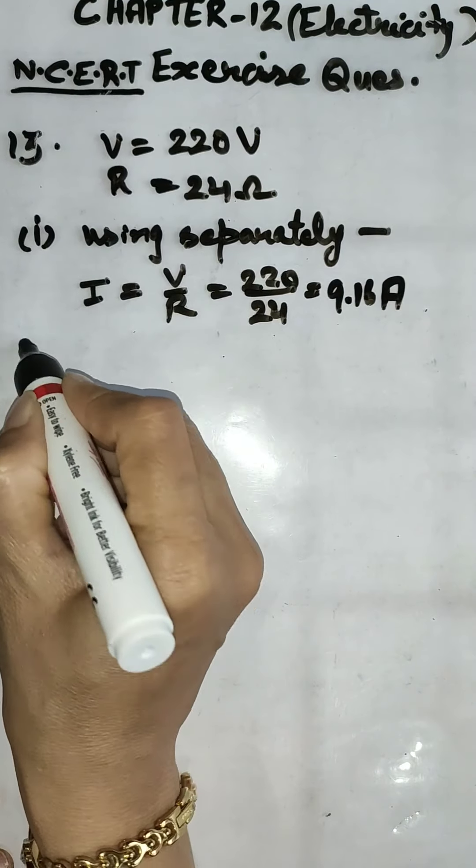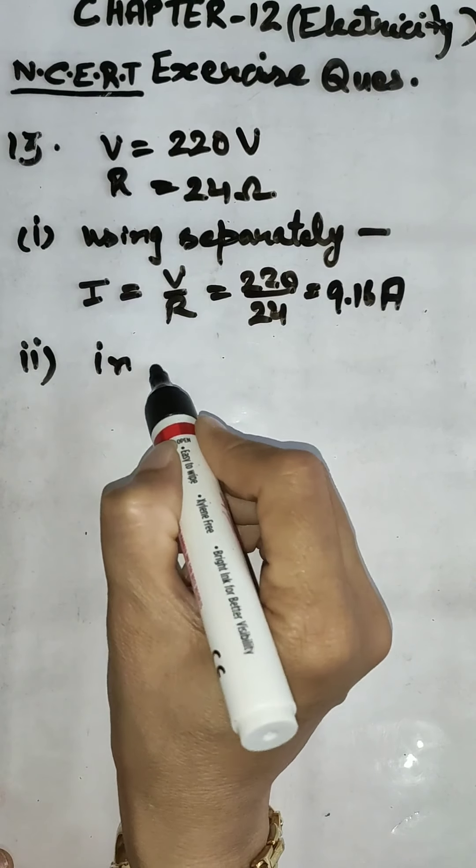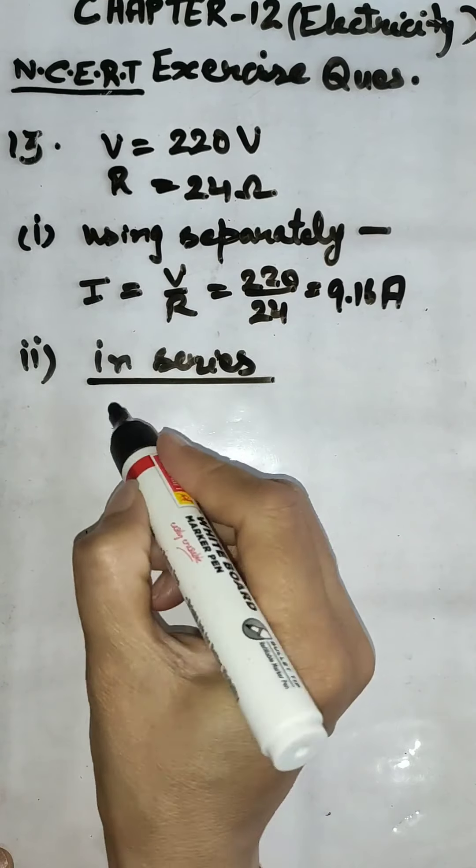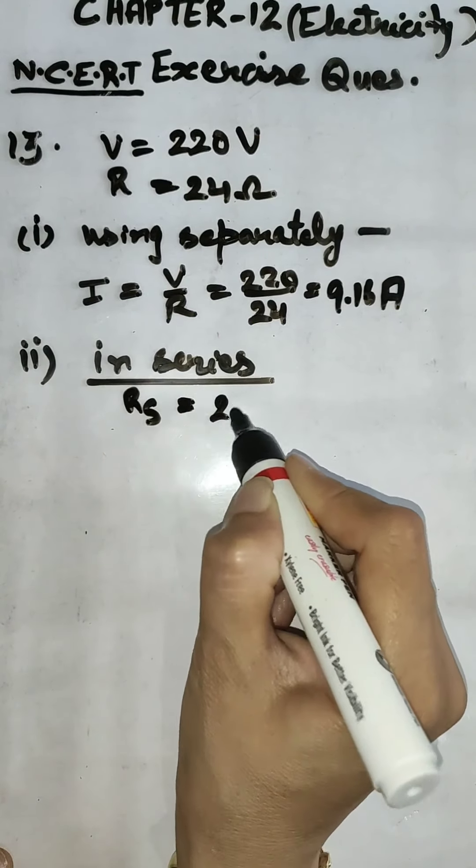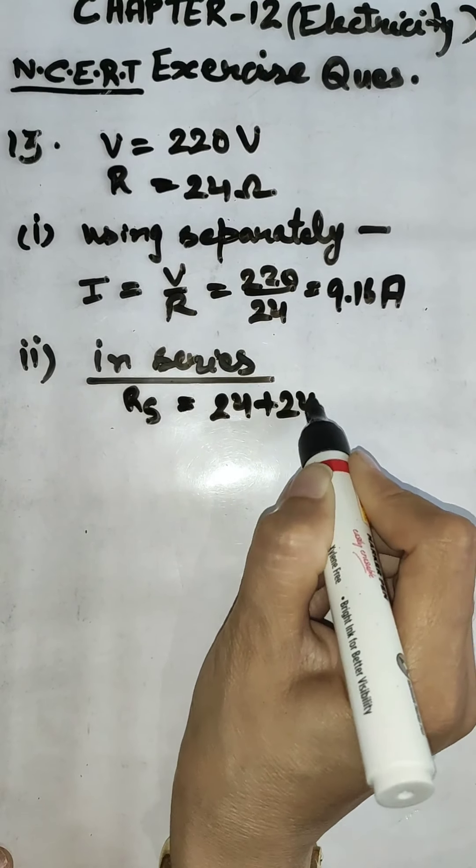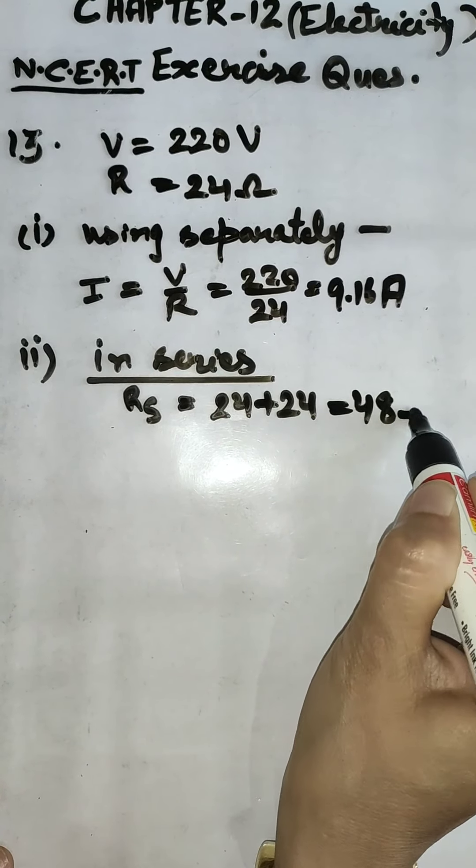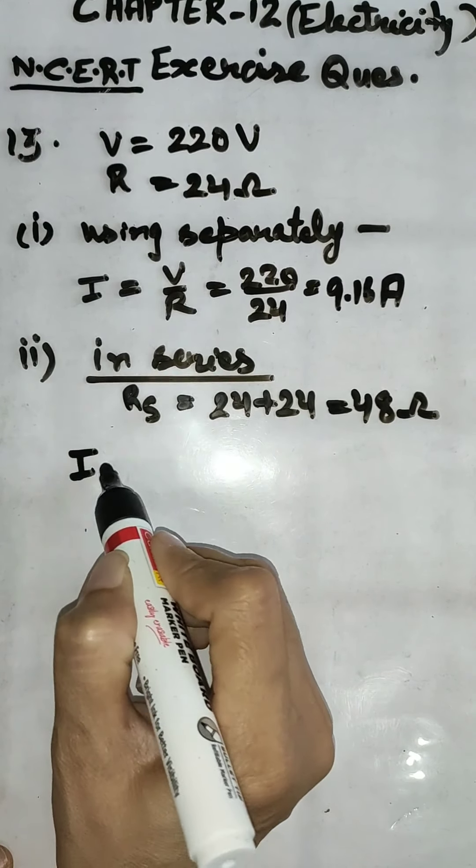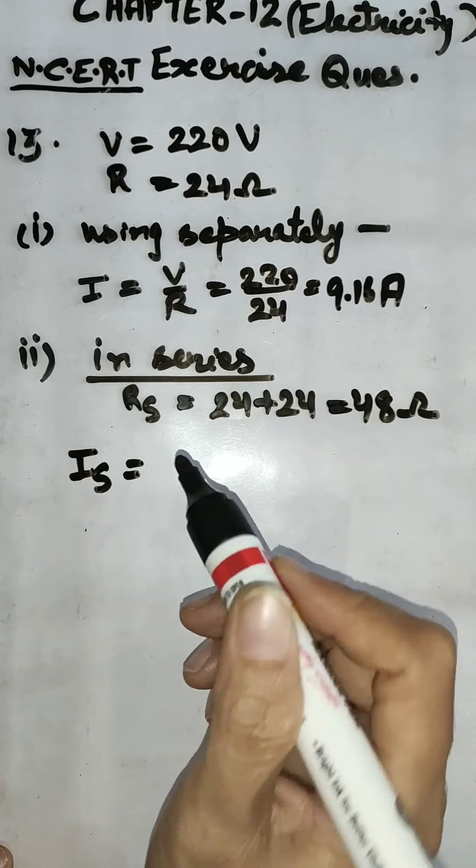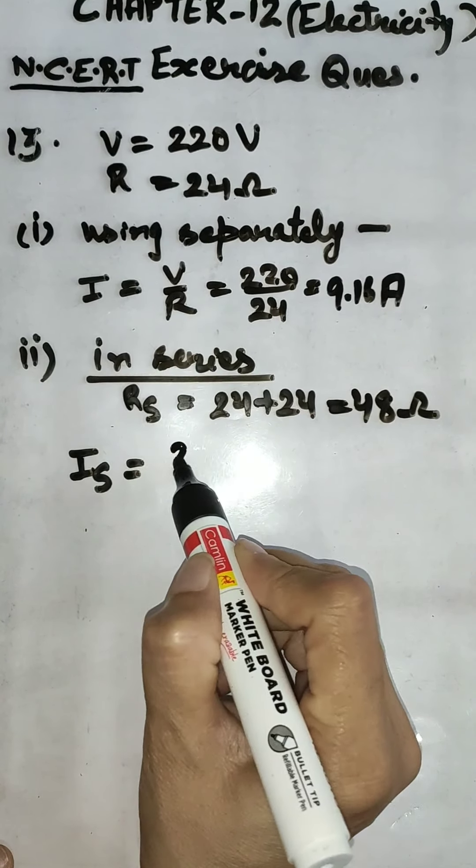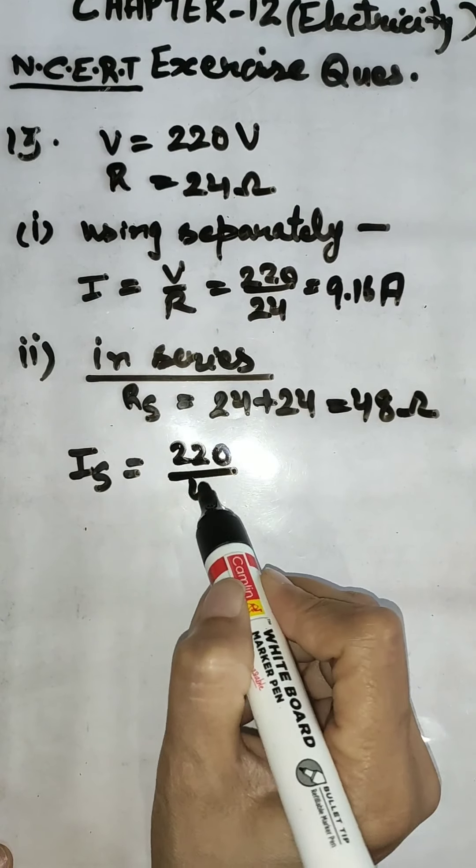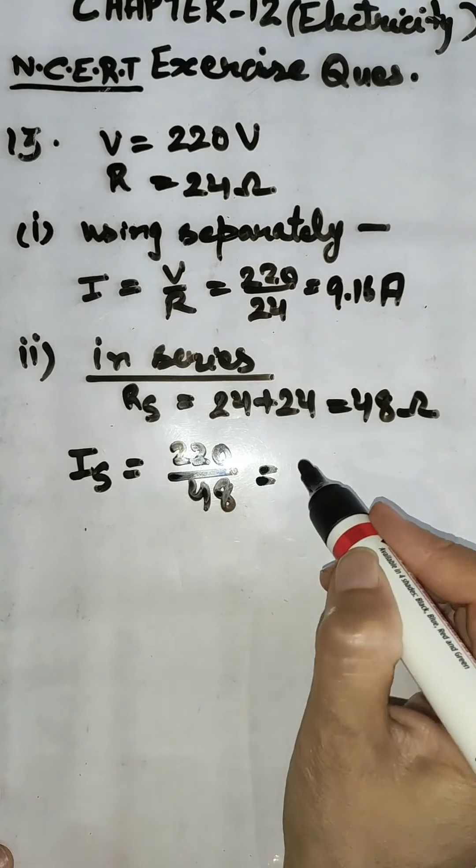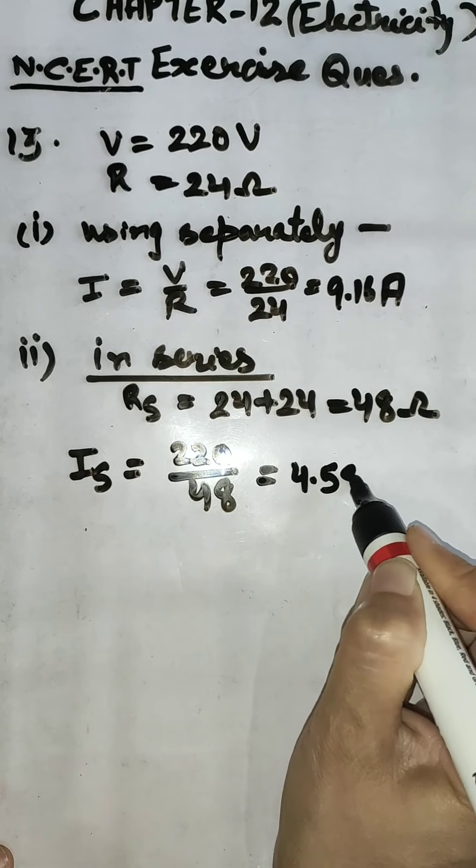Now in second case, in series. If we join them in series, what will be the resistance? Rs is equal to 24 plus 24 that is 48 ohm. Current when they are connected in series is equal to 220 divided by 48. We will get it 4.58 ampere.